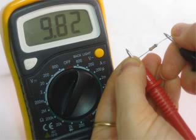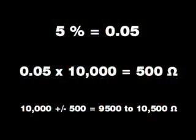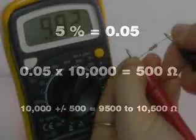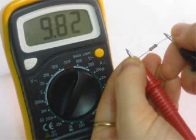Remember, the fourth band means that this is within 5%. Is this resistor within tolerance? 5% equals 0.05. 0.05 times 10,000 is 500, so this resistor should be within 10,000 plus or minus 500, or 9,500 to 10,500. So the resistor in this picture is within tolerance. Is yours?